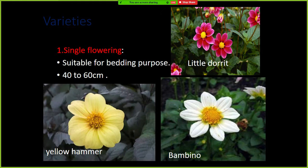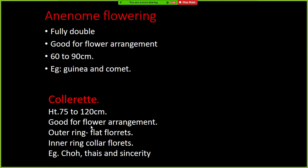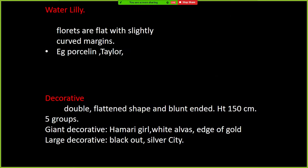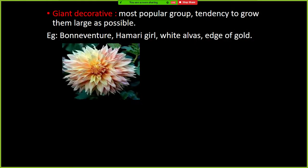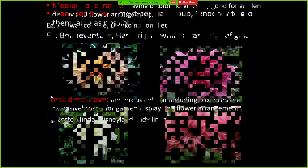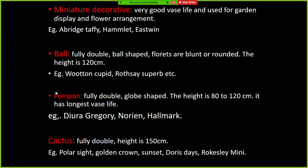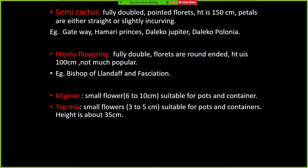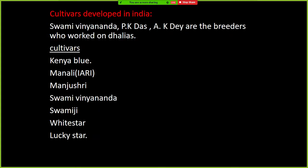With respect to varieties, single flowering types are mainly suited for bedding purposes. There are also anemone type, collarette type, water lily type, and decorative type. Giant decorative types are mostly exploited in India and are most popular, with a tendency to grow as large as possible. Medium decorative, small decorative, miniature decorative, ball type, pompon type, cactus type, semi-cactus type, and mignon type are also important cultivar groups.